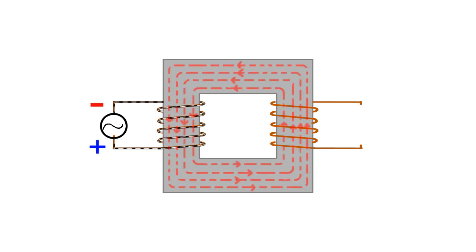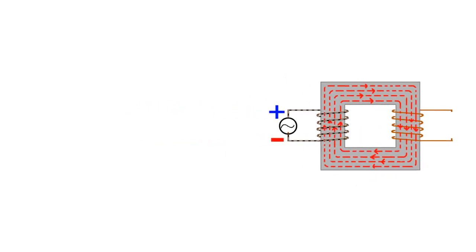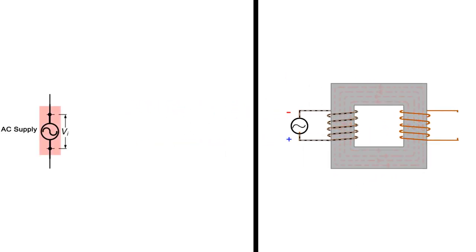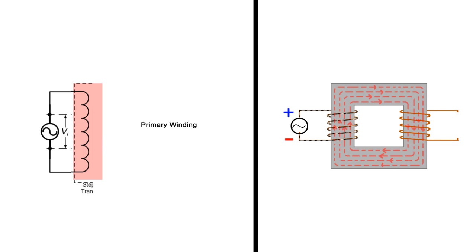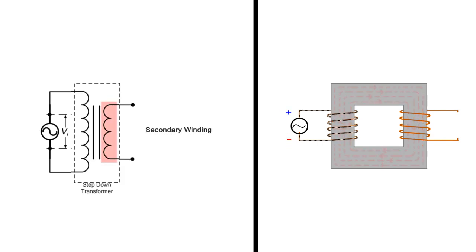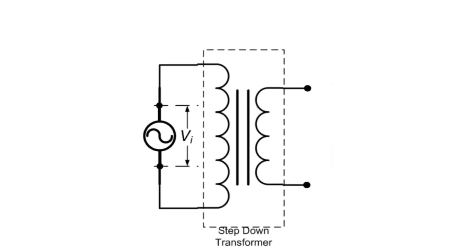To understand working of electrical transformer under no load condition, let us simplify the typical circuit to equivalent circuit. This represents the AC supply which is given to primary winding. Primary winding consists of number of turns bounded on magnetic core on which secondary winding is also bounded, forming the output terminal of the transformer.